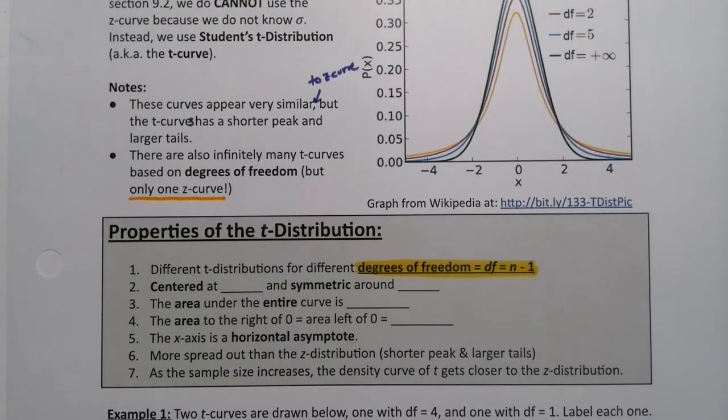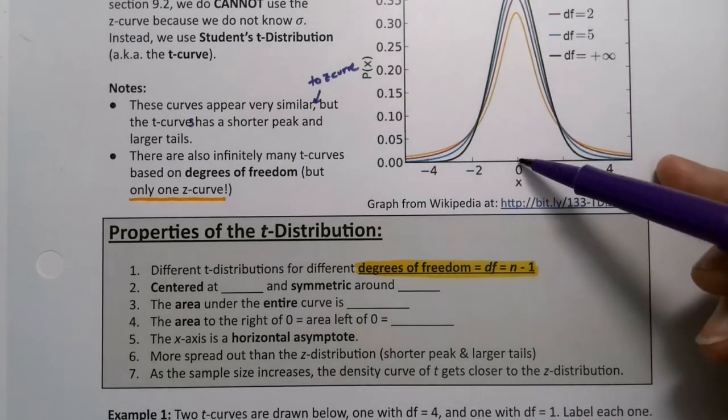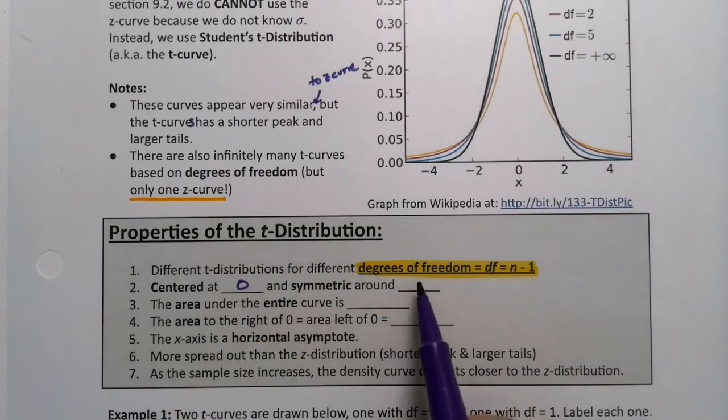All of these t curves are centered around zero, just like the z curve is. So the center of all of them is right there, zero. And they're all symmetric around zero.